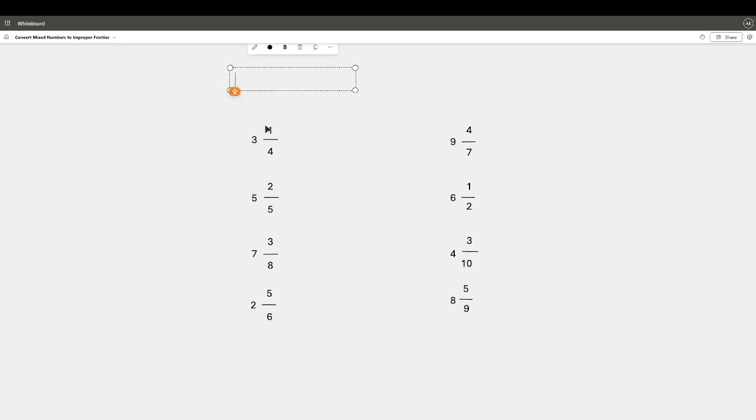We have the whole number on the left here. This is called the whole number. We have 3, 5, 7, 2, 9, 6, 4, 8 - those are all whole numbers. So for each mixed number, this is what we do to the whole number to find our new numerator.